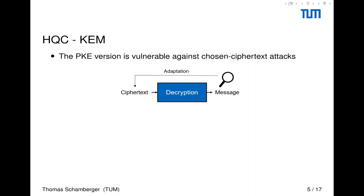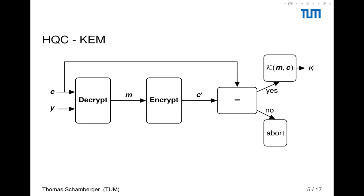I've shown you the PKE version of HQC, and these PKE versions are vulnerable to so-called chosen ciphertext attacks. These attacks work by letting you submit a certain ciphertext to the algorithm, observe the decryption result, then adapt on this decryption result, and from that iteratively let you infer the secret used in the decryption.